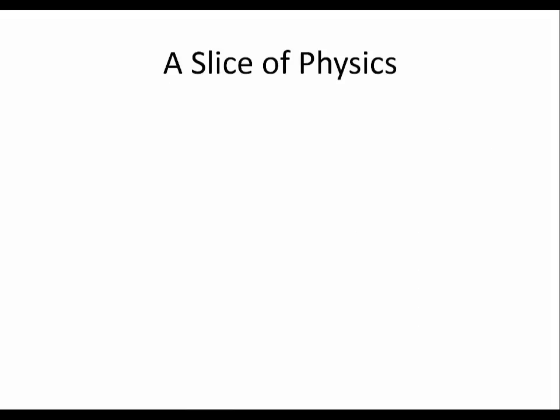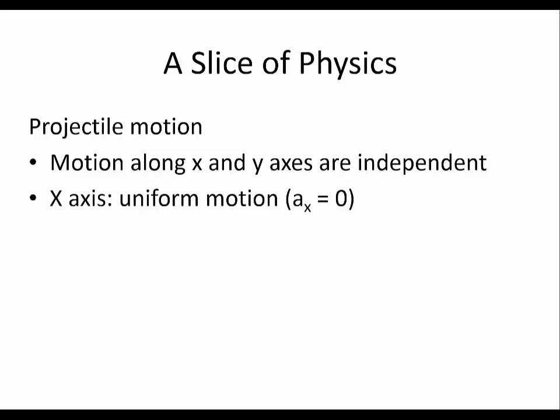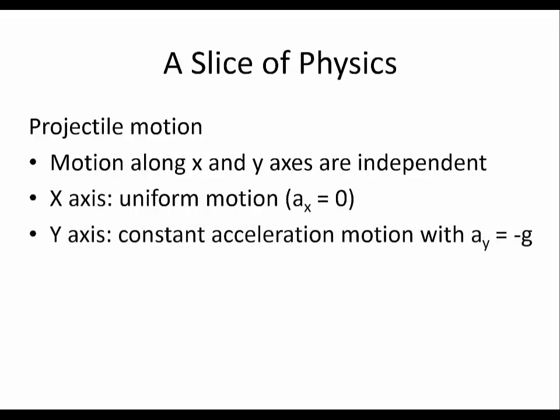So this slice of physics was all about projectile motion which acts along both the x and y-axis and importantly the motion along x and y-axis are independent and can be analyzed separately. Then we saw how the motion along x-axis is a simple uniform motion with no acceleration at all and the motion along y-axis was a constant acceleration motion with the acceleration due to gravity acting downward as long as we are near the surface of the earth. In the next video we will take a specific example on how to work with projectile motion.